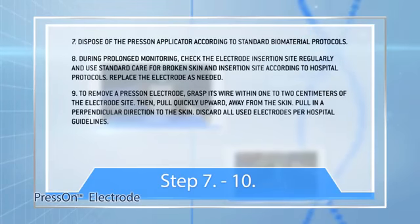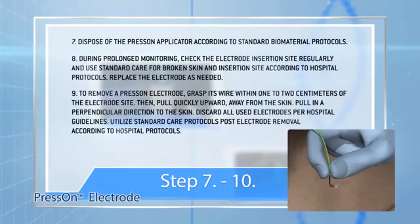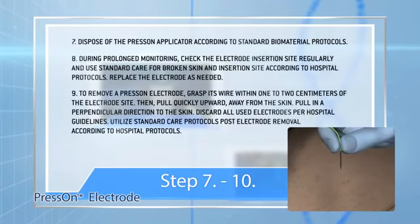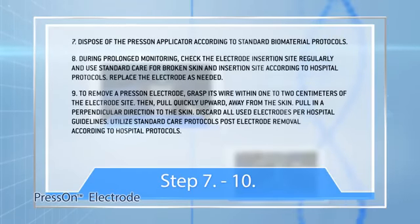Step 9: To remove a press-on electrode, grasp its wire within one to two centimeters of the electrode site. Then pull quickly upward, away from the skin. Pull in a perpendicular direction to the skin. Discard all used electrodes per hospital guidelines.